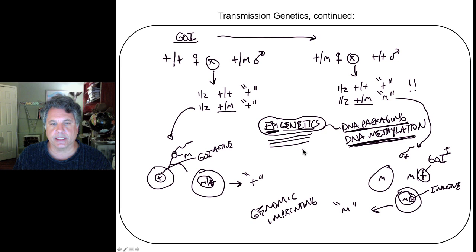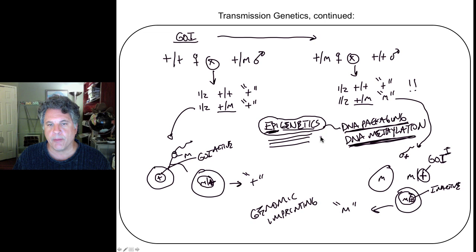Epigenetics represents changes in the epigenetic state of DNA, not in the sequence of DNA. We are not changing alleles per se, but rather changing how those alleles are expressed in an embryo. Only a certain subclass of genes are affected by this phenomenon in the female and male germlines, and that leads to certain human disorders.